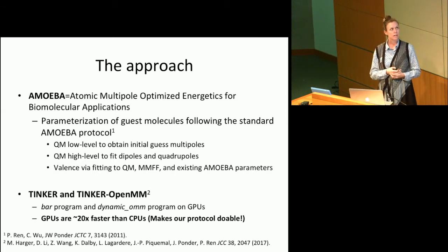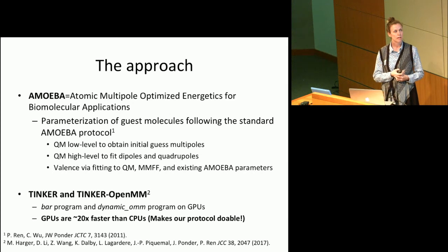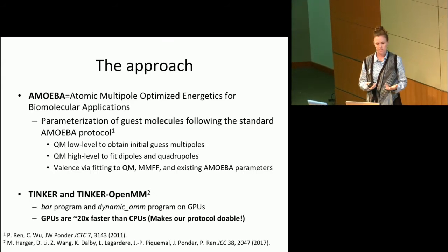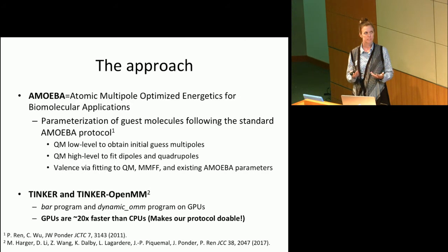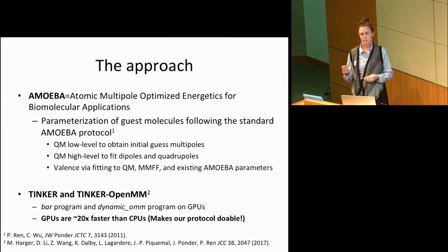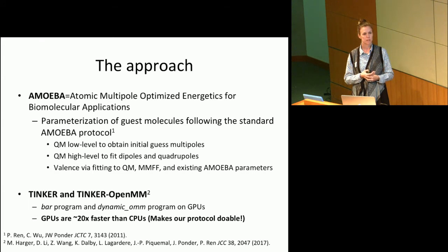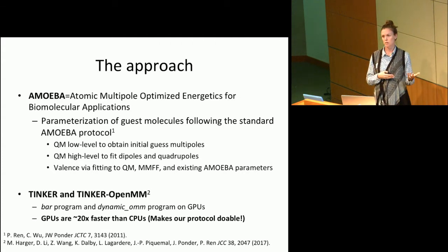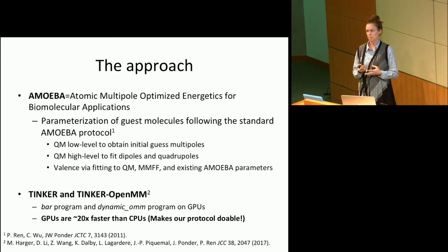To calculate our binding free energies, we utilized the AMOEBA force field, a polarizable model, and first generated parameters for the guests following a typical AMOEBA protocol. We performed an initial quantum calculation at MP2 with a Pople-type basis set to get initial guesses for multipoles — charges, dipoles, and quadrupoles — then ran a higher-level ab initio MP2 calculation with a correlation-consistent basis set. We then fit our initial guess dipoles and quadrupoles to the electrostatic potential from that higher-level quantum calculation, and rounded out valence parameters by fitting to quantum calculations from the MMFF force field and existing AMOEBA parameters.